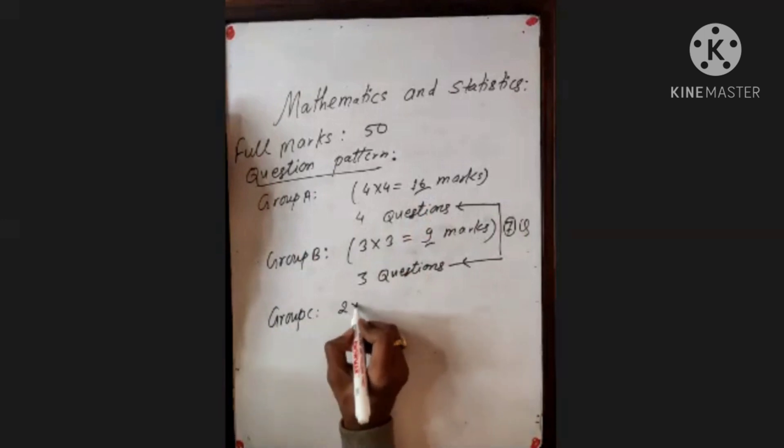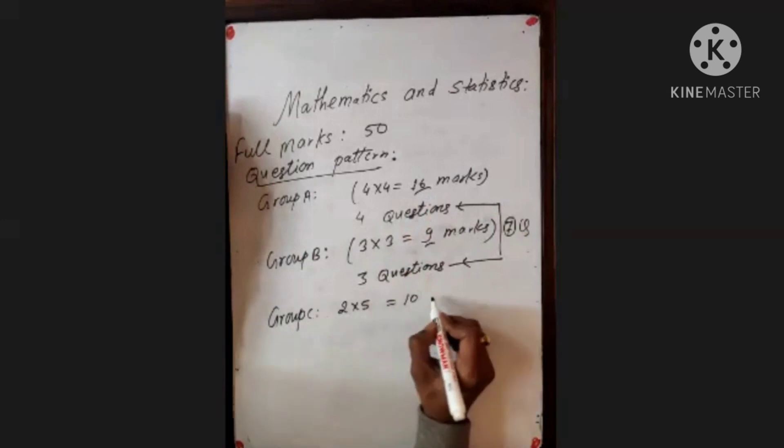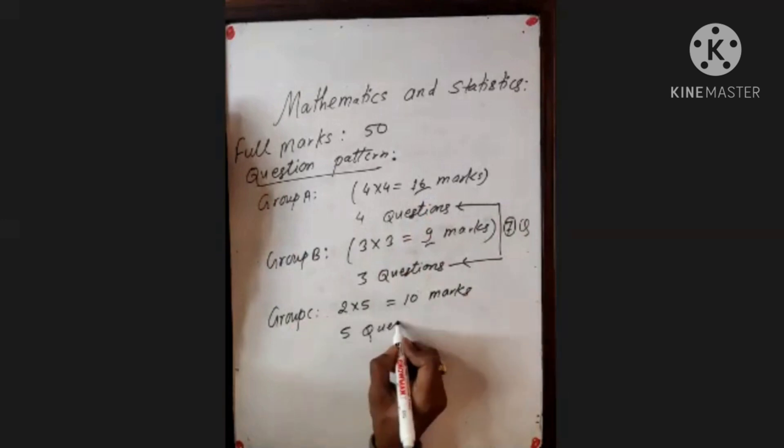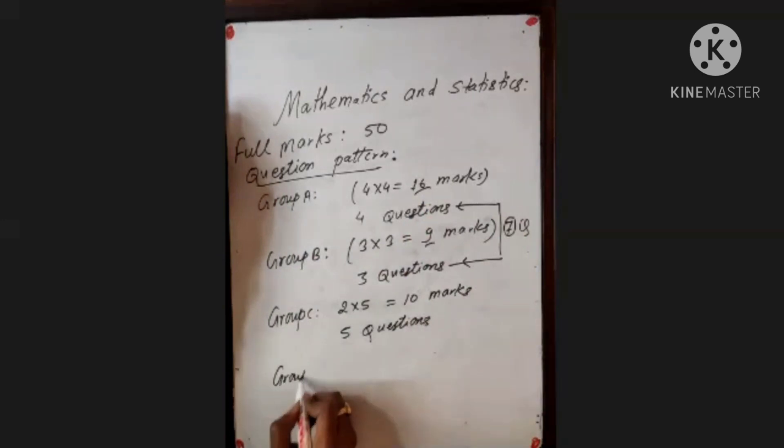Group C: 2 into 5 equals 10 marks with five questions. Group D: 1 into 15 equals 15 marks with 15 questions.